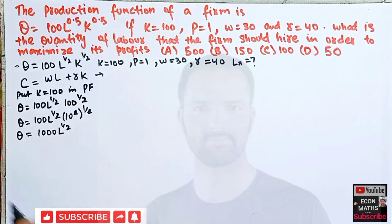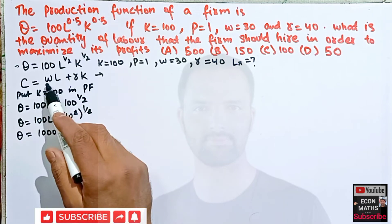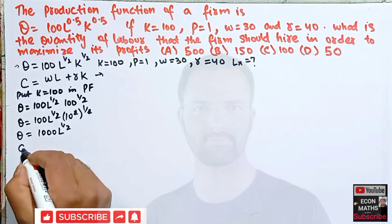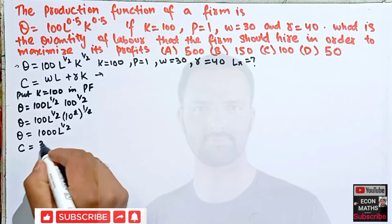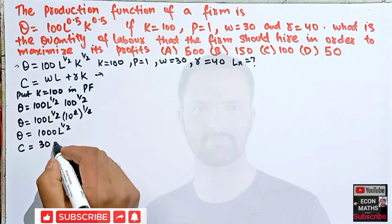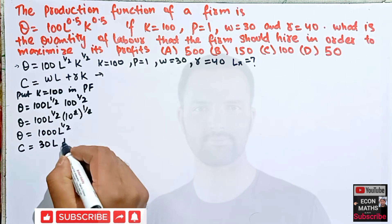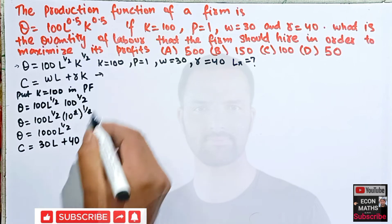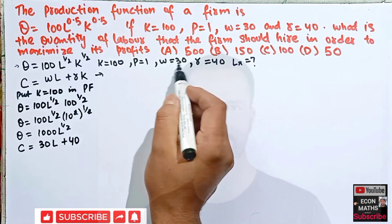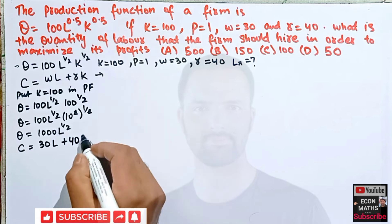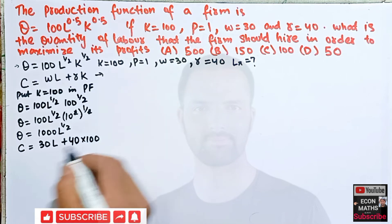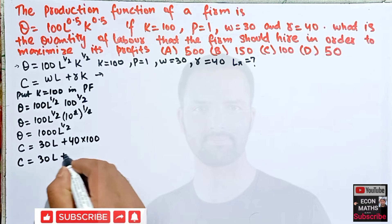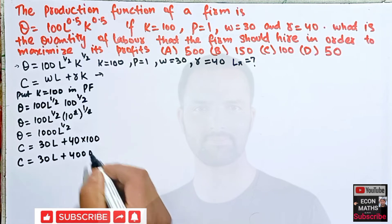Now plug in the values for the cost function. Wage rate W = 30 and K = 100, rental rate R = 40, so C = 30L + 40 × 100, which gives C = 30L + 4000. This is our total cost function.